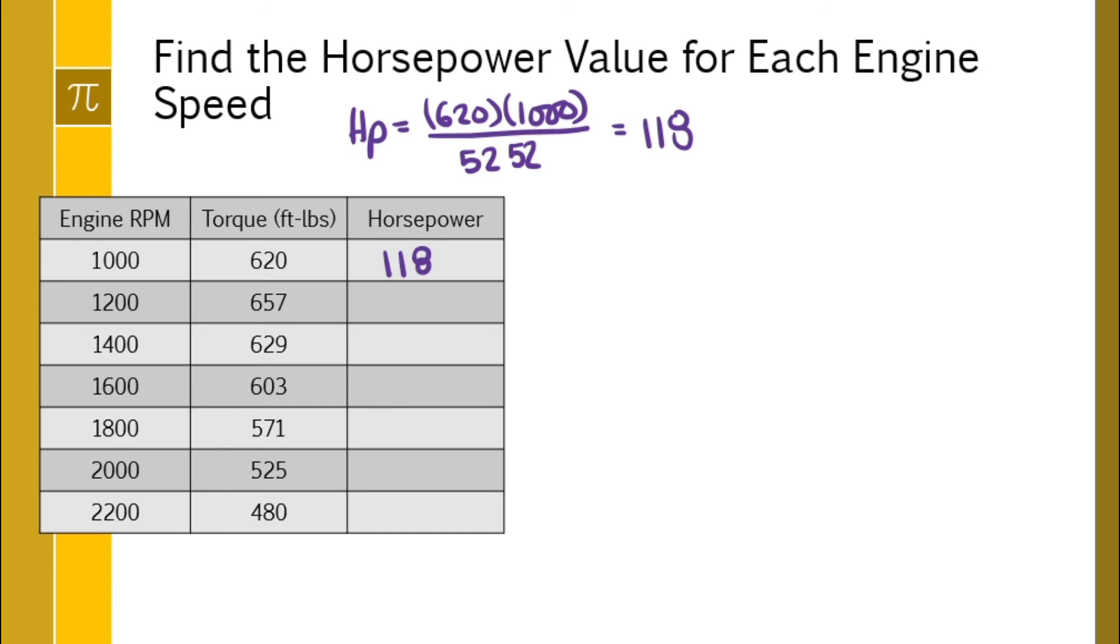And you would just repeat the process for each engine speed and torque to discover what the horsepower would be at those various points. So no need to show you that 15 times or several times. Let's just fill it in. At 1200 RPM, my horsepower would be about 150.